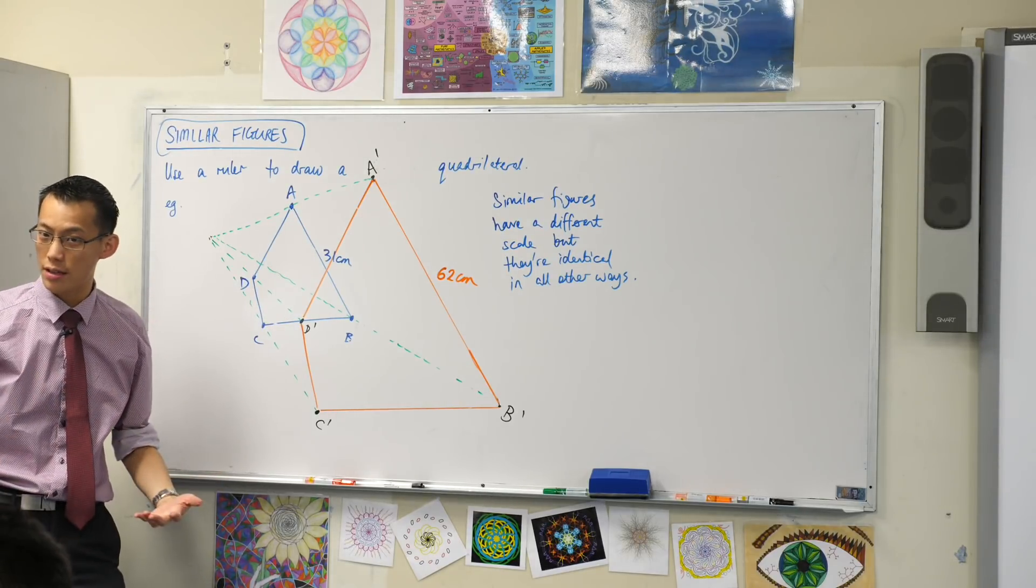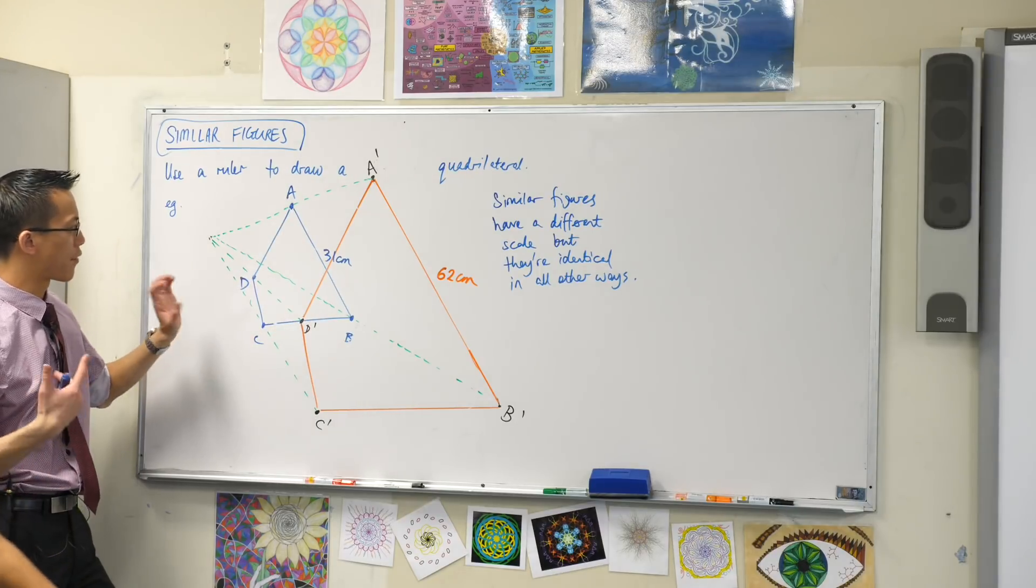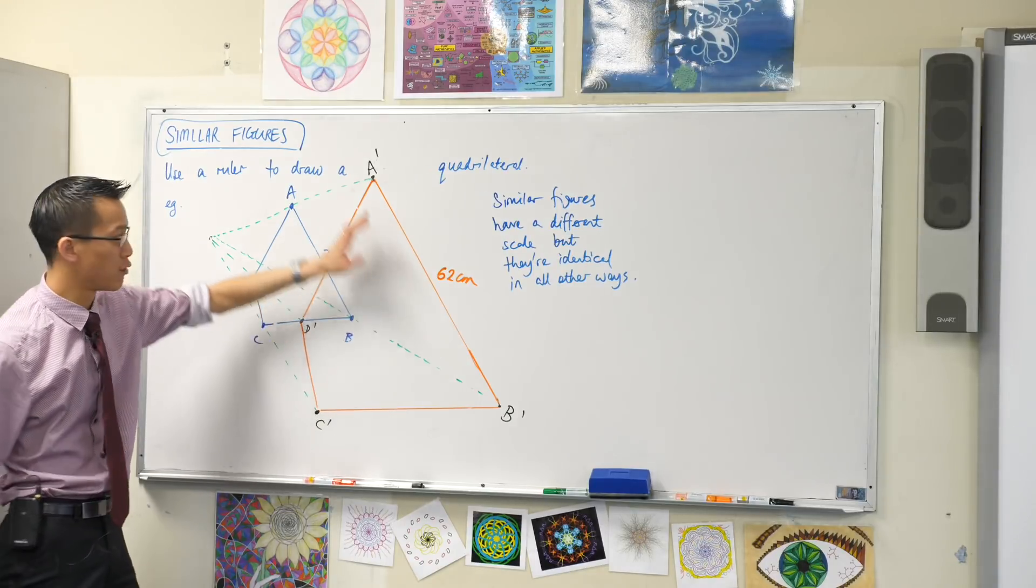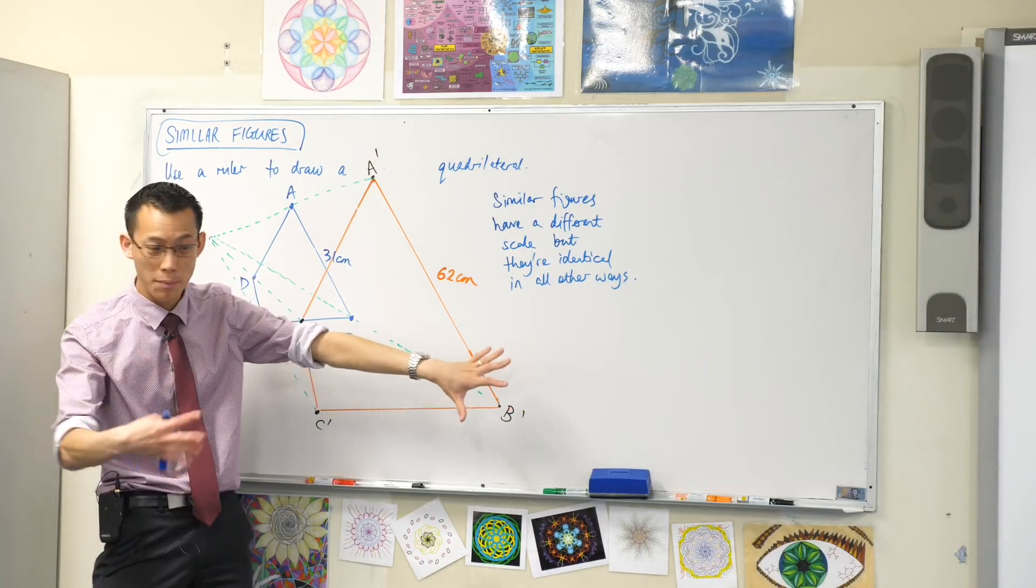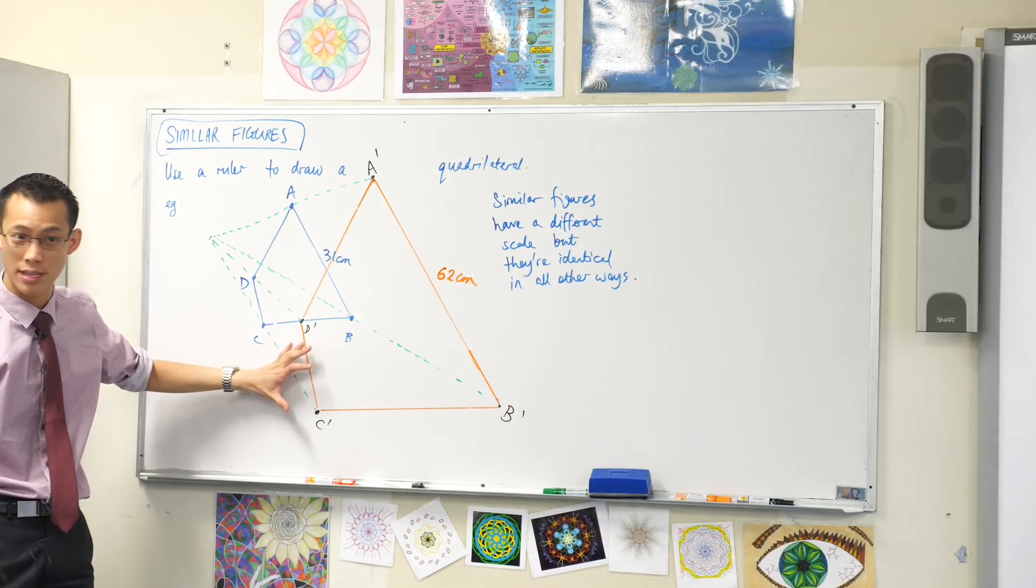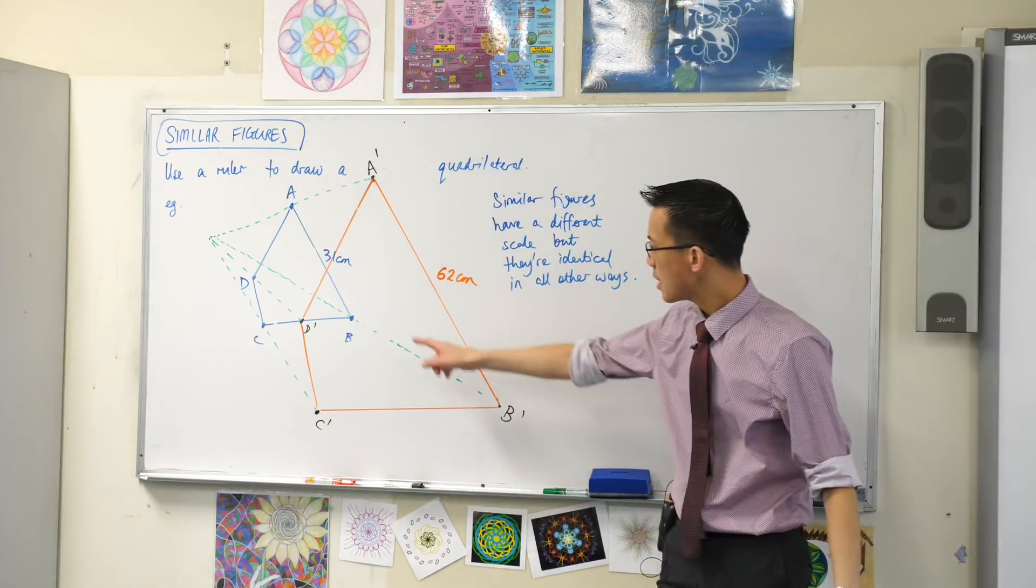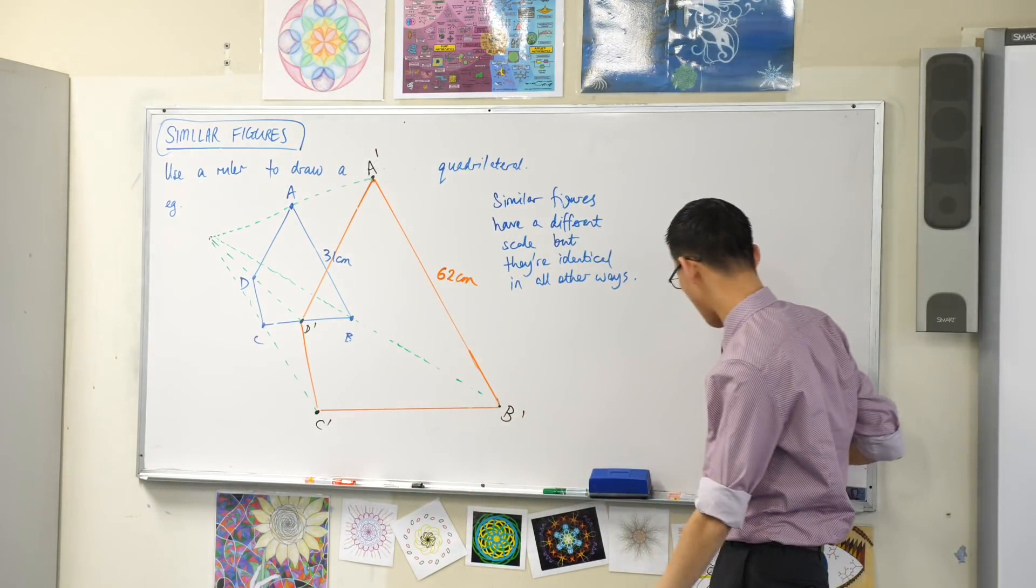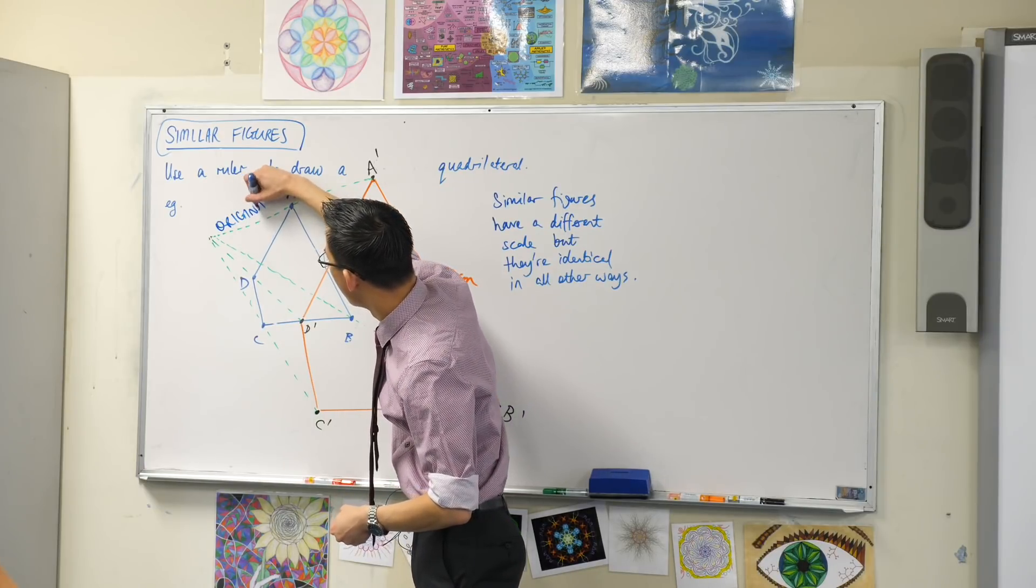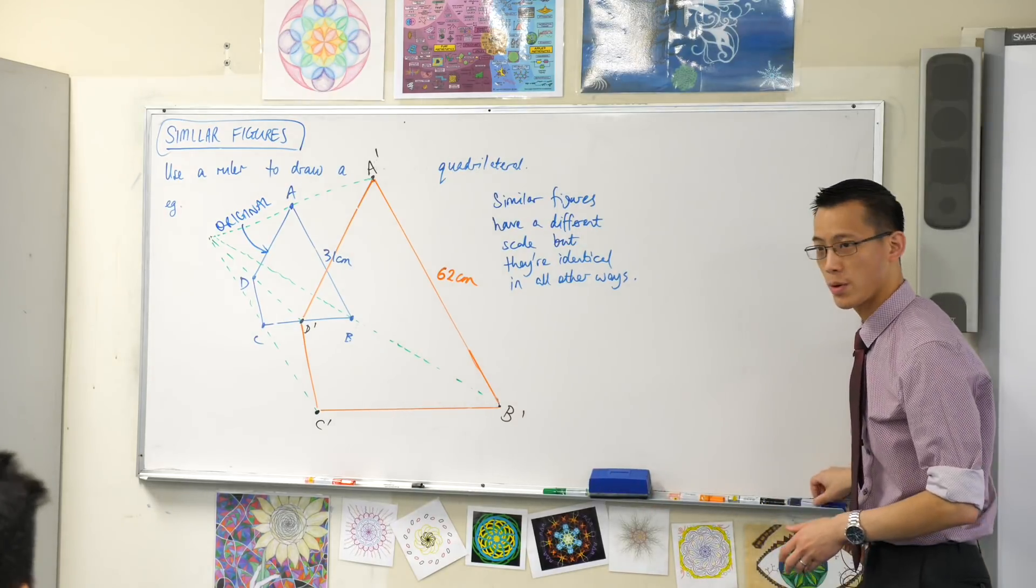What we've done is create an enlargement. This is our original. Does anyone know what the new shape is called? The one we created that was different? It's called the image. You may have heard this word from last year or the year before. Our image was double the size.